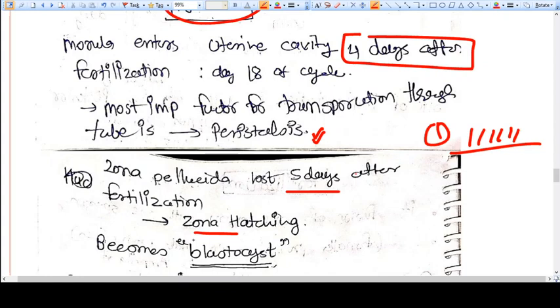If there is any tubal disease, this peristalsis is not going to happen, and that's why the embryo cannot be transported to the uterine cavity. So the embryo can implant in the tubes, and we can have an ectopic pregnancy.